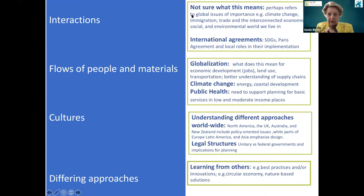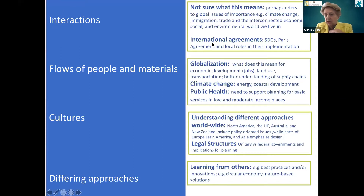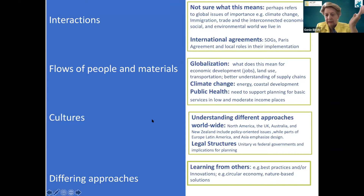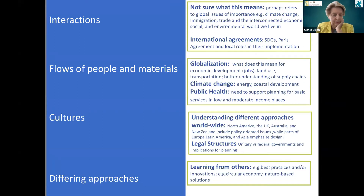We don't know what 'interactions' means. Maybe it means understanding the importance of global themes such as climate change, immigration, trade, and so forth, or maybe it means understanding international agreements. Flows of people and materials is a little clearer — it probably means globalization and how we can think about that within our curriculum. Cultures, again, is obvious: understanding different approaches worldwide, but how do we do this? And obviously, learning from others — what are the best practices and what can we learn from other places?